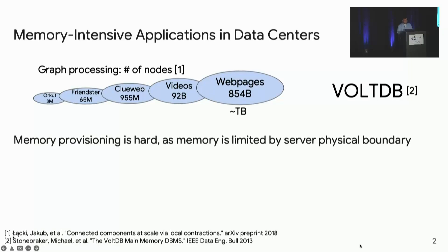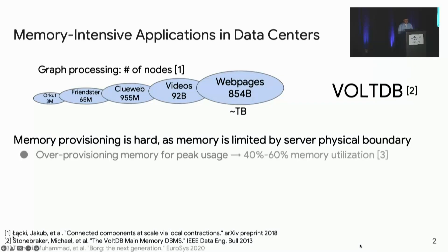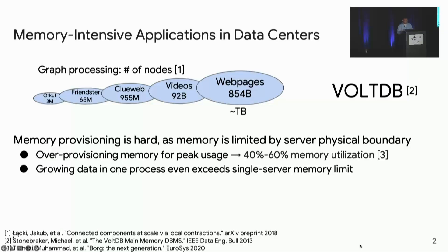However, memory provisioning for these applications is hard, mostly because memory is limited by the server's physical boundary. Data center operators normally over-provision or reserve memory for application peak usage to avoid out-of-memory crashes. This partially causes only 40 to 60 percent memory utilization in data centers. To make things worse, growing application data in one OS process may even exceed a single server's memory limits.